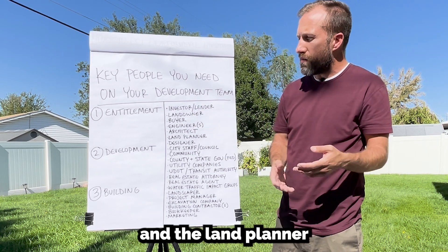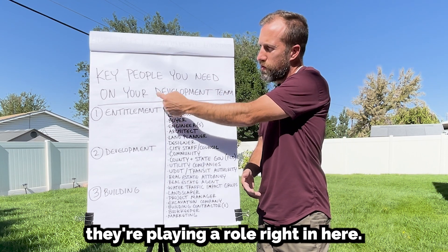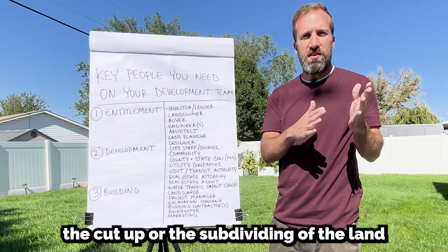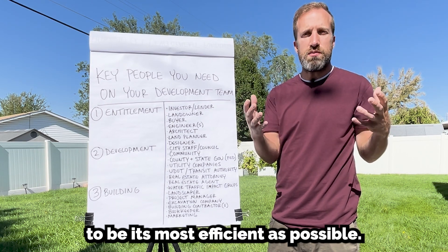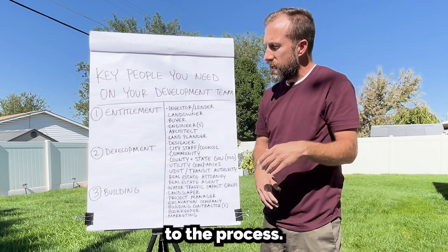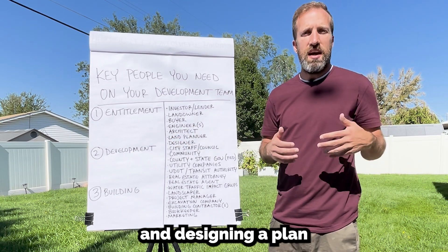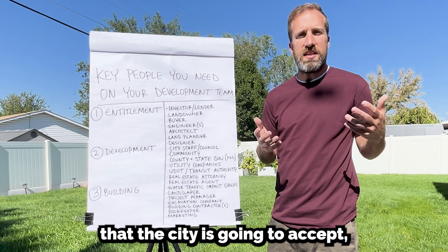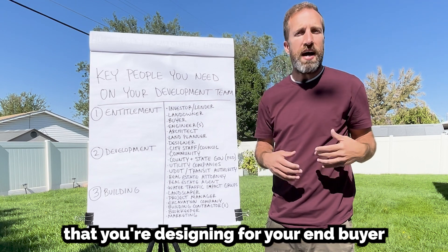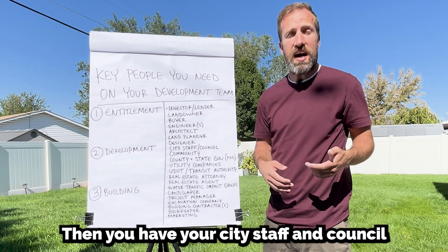You're going to need engineers throughout the whole process. Then you have your land planner, who plays a crucial role in making the cut-up or subdividing of the land as efficient as possible. There are also designers — again dealing with architects — designing a plan the city will accept while also designing for your end buyer and what they want to see in an end product.